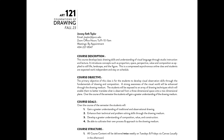Course Description: This course develops basic drawing skills and understanding of visual language through studio instruction and lecture. It introduces concepts such as proportion, space, perspective, value, and composition as applied to still life, landscape, and the figure. This is an asynchronous online class and students are expected to work independently and stay on schedule. The primary objective is for students to develop visual observation skills through the fundamentals of drawing and composition, and to better translate what's observed in three-dimensional space onto a two-dimensional plane.